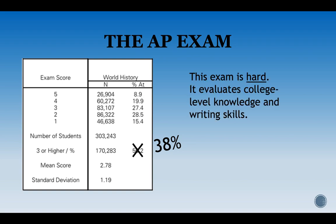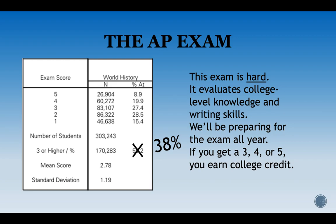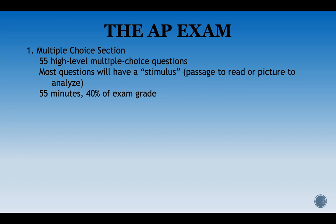In this class we are going to be preparing for the exam all year with the hopes of you all earning a three, four, or five to earn college credit. There are four parts to the exam — three are writing and the first is multiple choice. There are 55 high-level multiple choice questions. These are not simple questions; they are very complex and require multiple layers of thinking — depth of knowledge two, three, and four questions. Most questions will also have a stimulus attached, either a passage to read or a picture to analyze. You get 55 minutes for this section and it is 40% of your exam grade.